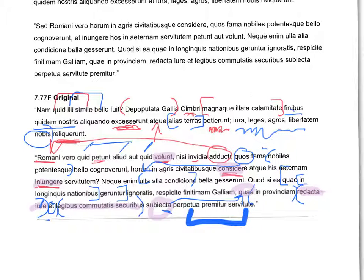Look at nearby Gaul, which is in the province — under the control of Rome — with its law having been redacted and its other laws having been commuted, i.e. with their rule having been overturned, which, subjected, is pressed — or oppressed — by perpetual servitude.